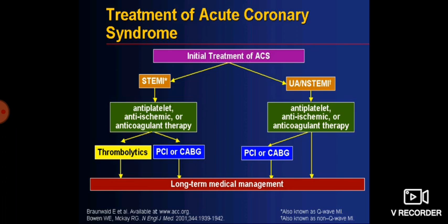For treatment of acute coronary syndrome: initial treatment differs between STEMI, unstable angina (UA), and Non-STEMI. For STEMI: anti-platelet therapy, anti-ischemic therapy, anticoagulation therapy, and proceeding to PCI or CABG (coronary artery bypass graft) for long-term management. For UA and Non-STEMI: anti-platelet drugs, anti-ischemic drugs, anticoagulation therapy, and then PCI or CABG as long-term management.